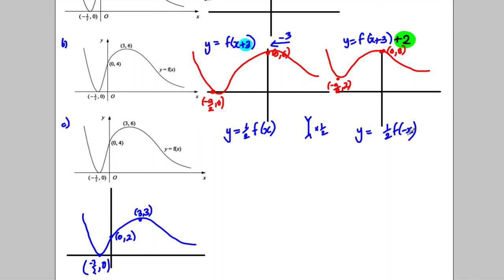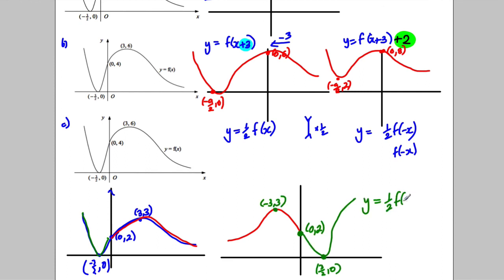What does the negative do? F of negative x is a reflection in the y-axis. So this thing over here is going to be coming out like this, this way, and this here is going to be coming down like that. This point is not going to be negative 3 over 2, 0, it's going to be 3 over 2, 0. This point here is going to stay the same at 0, 2. And this point here is not going to be 3, 3, it's going to be negative 3, 3. And there we have y is equal to a half f of negative x.